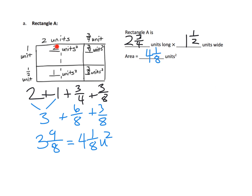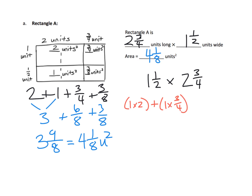What they also want us to do is actually multiply this. Let's write one and a half times two and three quarters. They want us to show the multiplication: that's one times two, plus one times three fourths, plus one half times two, plus one half times three fourths. Those are our four partial products.